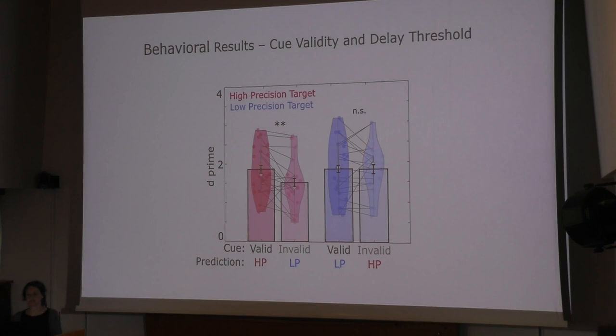We don't see this effect for the low precision target, which is not affected by the cue. This might be a ceiling effect since the temporal precision of the target is already low, so it's not detrimental to prepare for a high precision target sound.